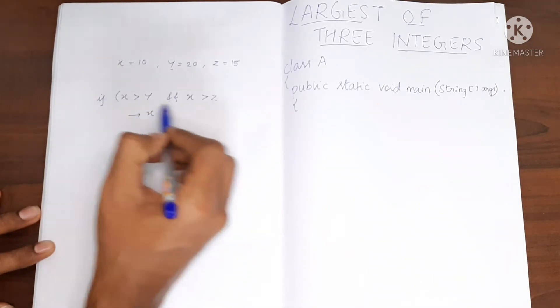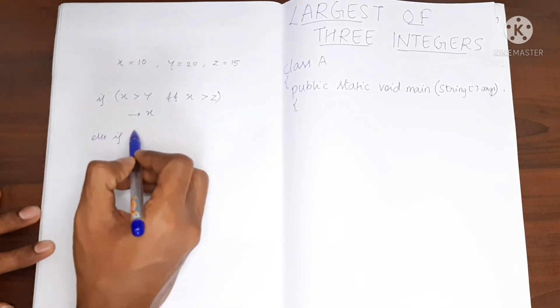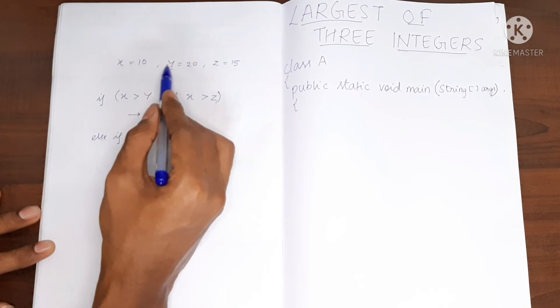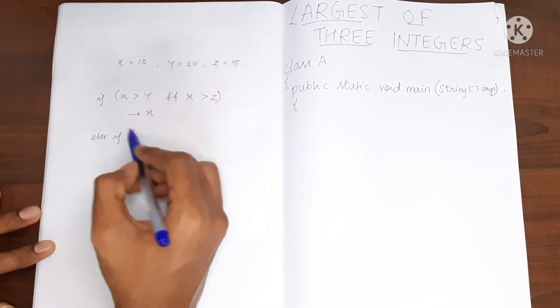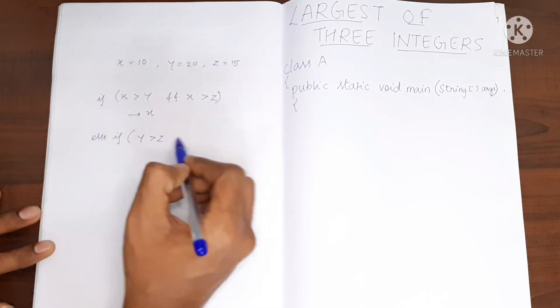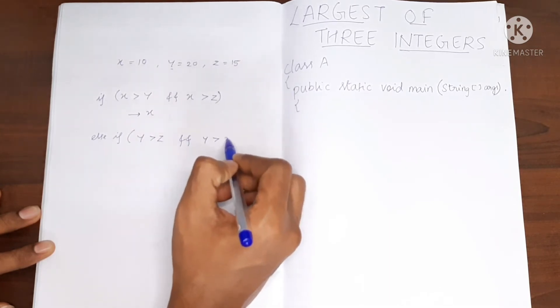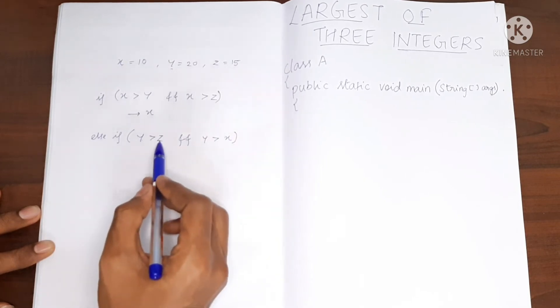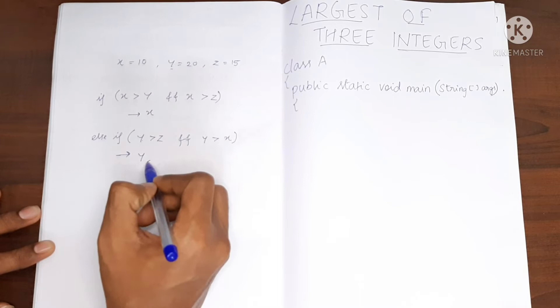Next we will check else if: if y is greater than x and y is greater than z. If y is greater than both of these, we will say y is the largest one.